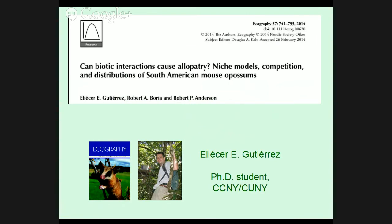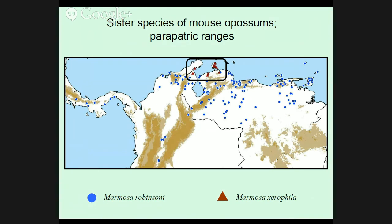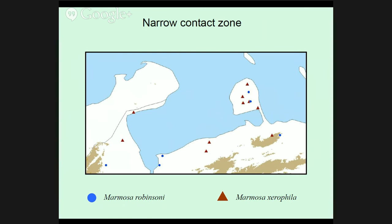Now I'll move on to the fifth study, by former PhD student Eliezer Gutiérrez, now a postdoc at the Smithsonian, who's been working in the exciting area of biotic interactions on species distributions — one of the two areas people are most excited about in the field. These are mouse opossums — two sister species: Marmosa robinsoni in blue records and Marmosa saurophila in brown triangles — with peripatric ranges. They come into contact and abut but don't overlap, with very narrow transition zones. Zooming into the area, we see occurrence records for both species that are not found sympatrically and not overlapping.